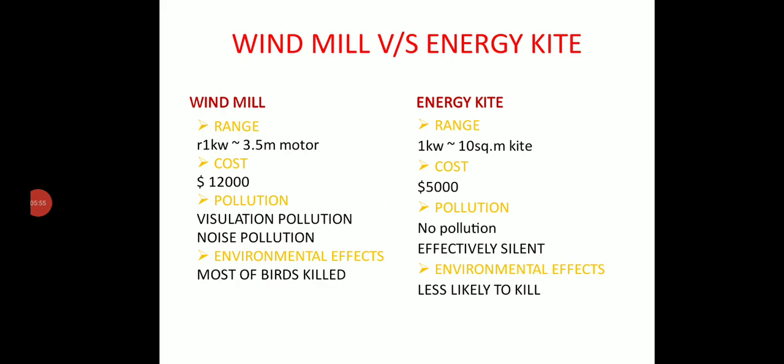Here is the comparison between windmill and energy kites: Windmill has a range of 1 kilowatt to 3.5 megawatts, whereas energy kite has a range of 100 kilowatt to 10 megawatts. Windmill costs around $12,000, whereas energy kite is approximately $5,000.